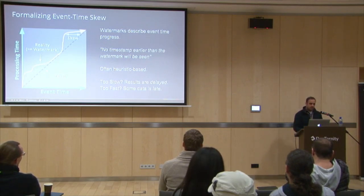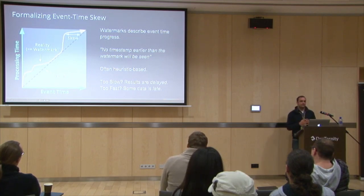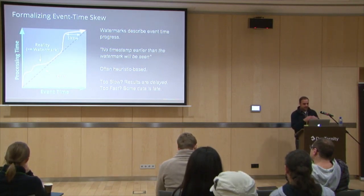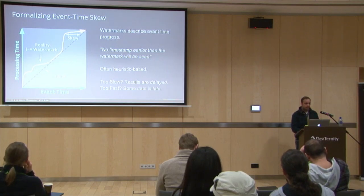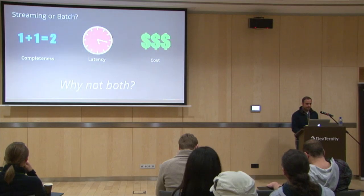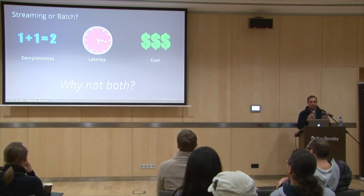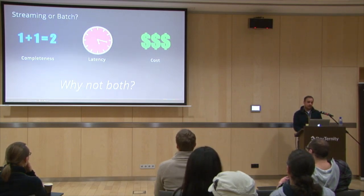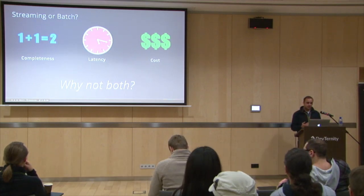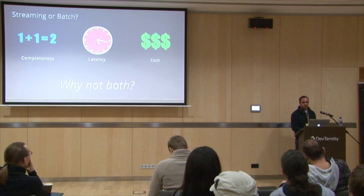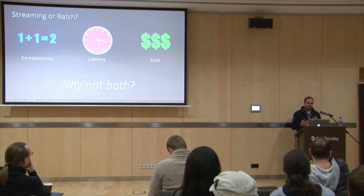This line is what we call the watermark. In stream processing systems, watermark determines how late the data is. The system builds this watermark and says: this is when I think the data should get to the server, and it uses this watermark to determine whether data is being processed late or on time. If you want full answers, you need batch processing for completeness, but then you have latency. If you want to process things as quickly as possible, you use streaming, but then you have a completeness problem and it's more costly. There are all these trade-offs.